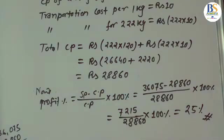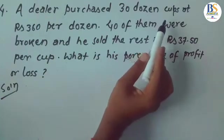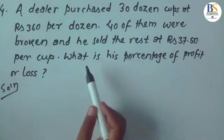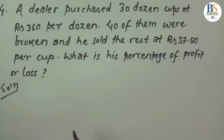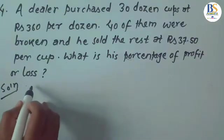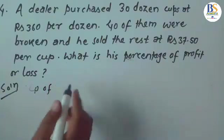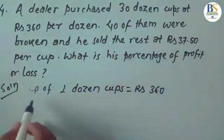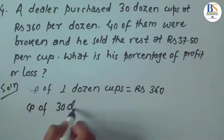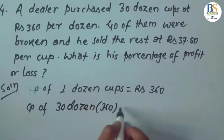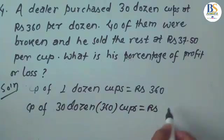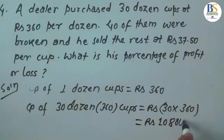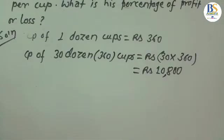Question four: A dealer purchased 30,000 cups at RS 360 per thousand. Forty of them were broken and he sold the rest at RS 37.50 per cup. What is his percentage of profit or loss? CP of 1,000 cups = RS 360, so CP of 30,000 cups = RS 30 × 360 = RS 10,800.